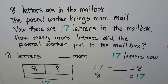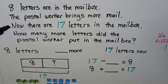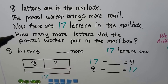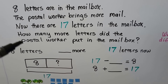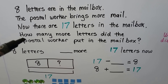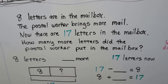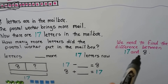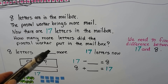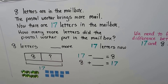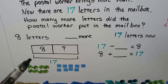There are 8 letters in a mailbox. The postal worker brings more mail. Now there are 17 letters in the mailbox. How many more letters did the postal worker put in the mailbox? We need to find how many more letters were put in. We need to use the 8 and the 17, and find the difference between 17 and 8. There were 8 letters, some more were put in, and now there are 17.